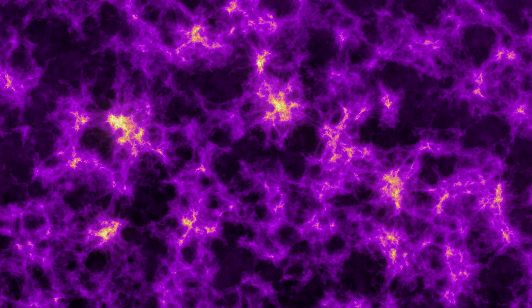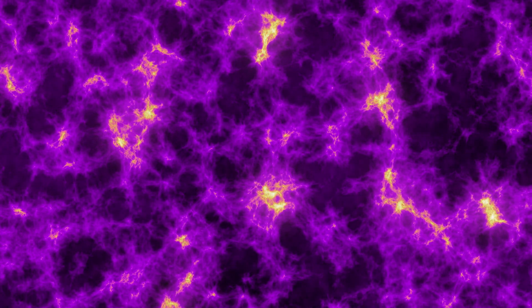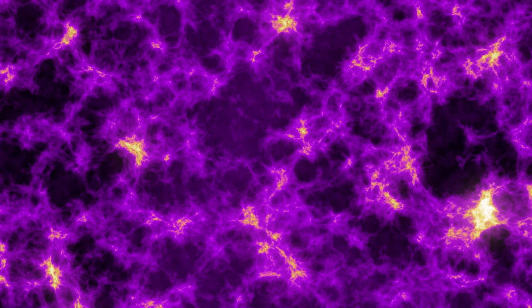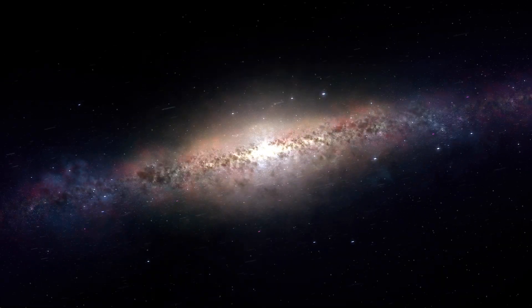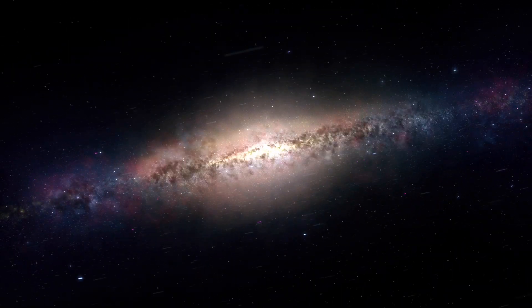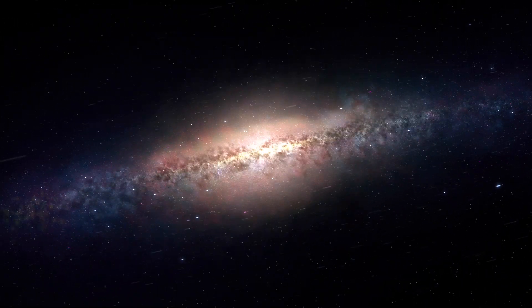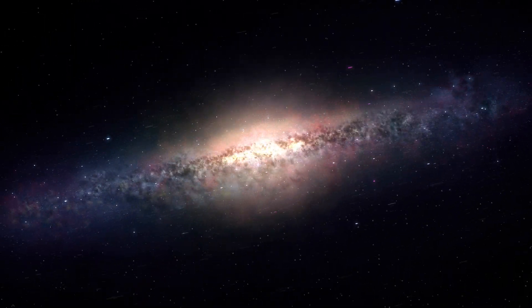The early universe's slight density variations created pockets where dark matter was more concentrated. These dense regions pulled in both dark matter and normal matter, such as gas and dust, laying the foundations for galaxy formation.